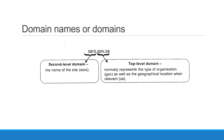Domain names: you get a second level domain, which is the name of the site — SARS in this example. Then gov.za would be a top level domain, which normally represents the type of organization, like gov for government, and the geographic location, like ZA which stands for South Africa.